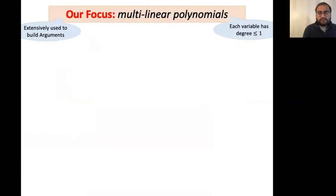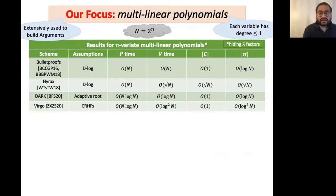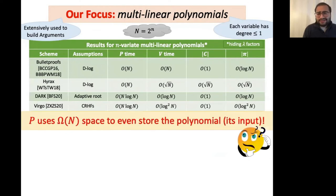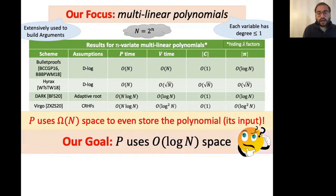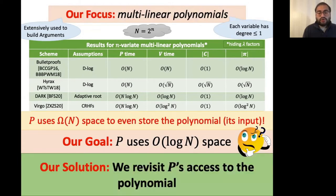A number of schemes provide trade-offs between proof size, prover time, verifier time, and assumptions. For example, bulletproofs give a scheme from discrete log with logarithmic-size proofs and O(N) prover and verifier time, where N denotes the size of the n-variate multilinear polynomial. The key question is the space of the prover. Certainly it must be Ω(N) to even store the polynomial, but the requirement for our complexity-preserving SNARK requires the committer to use only logarithmic space in N, which seems paradoxical. To resolve this, we must revisit how the committer is given access to the polynomial.